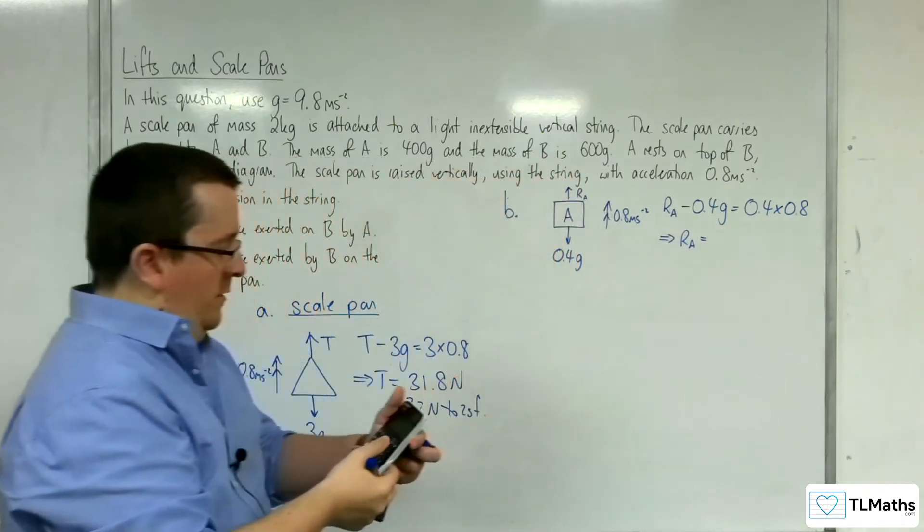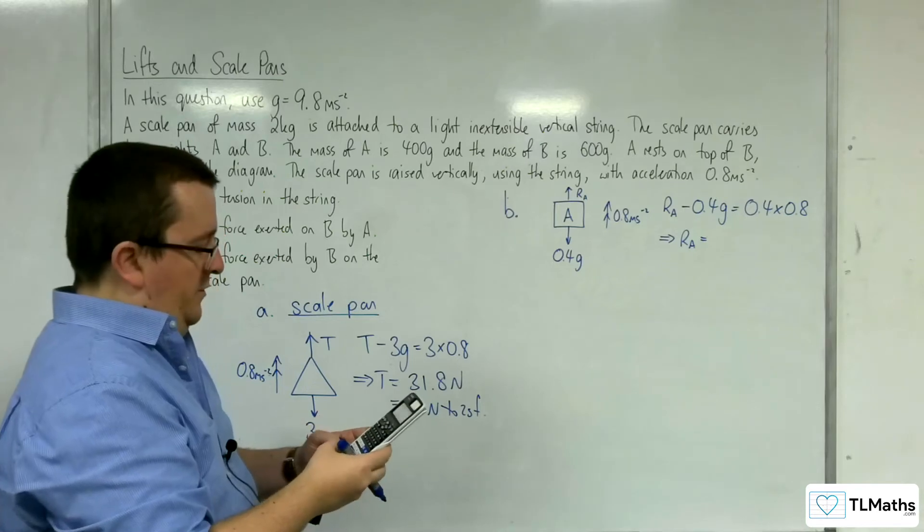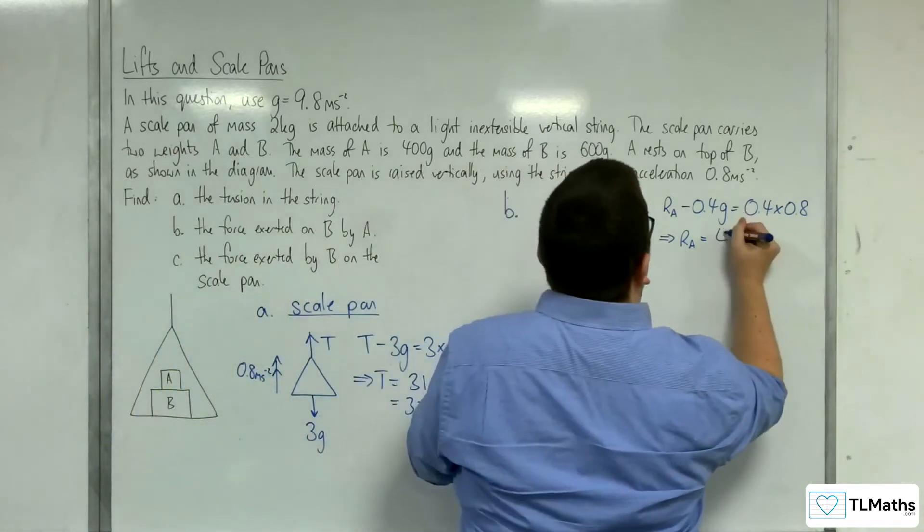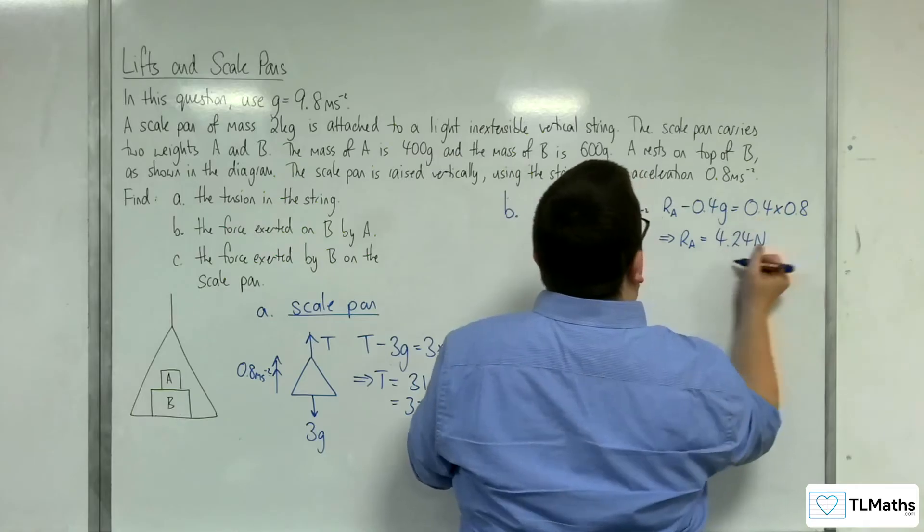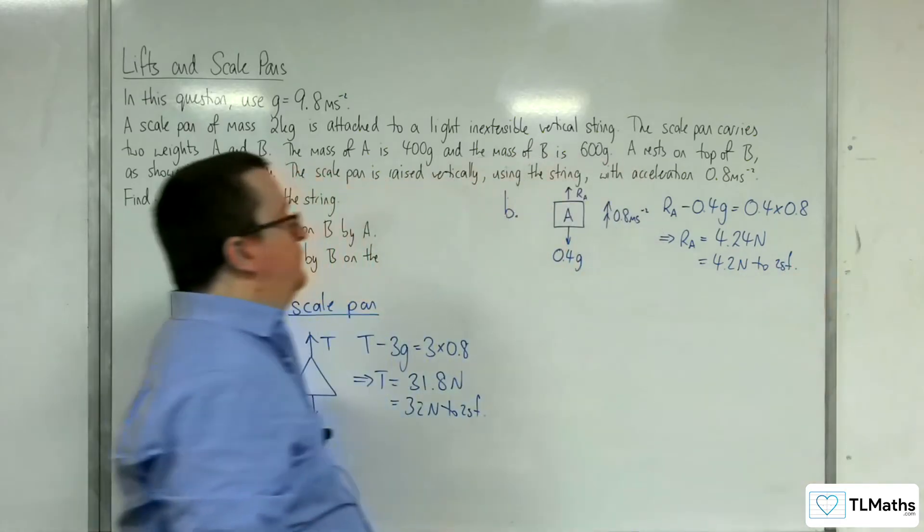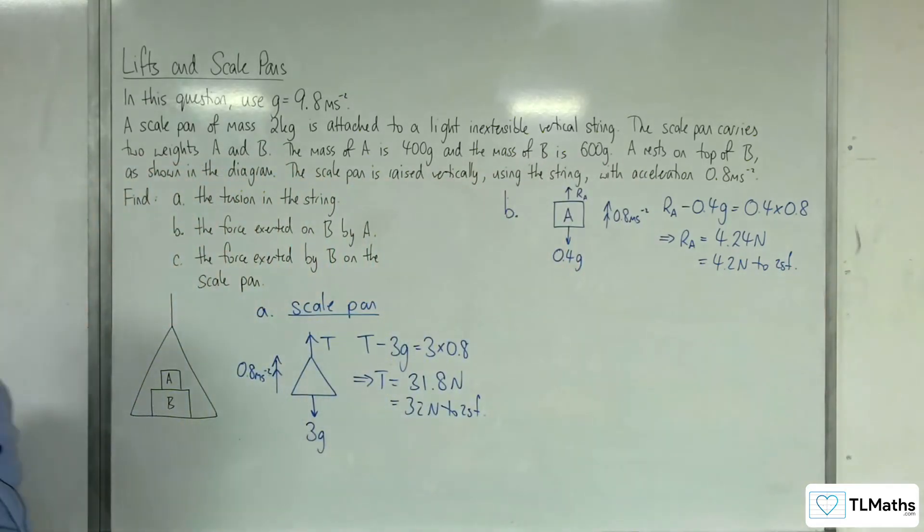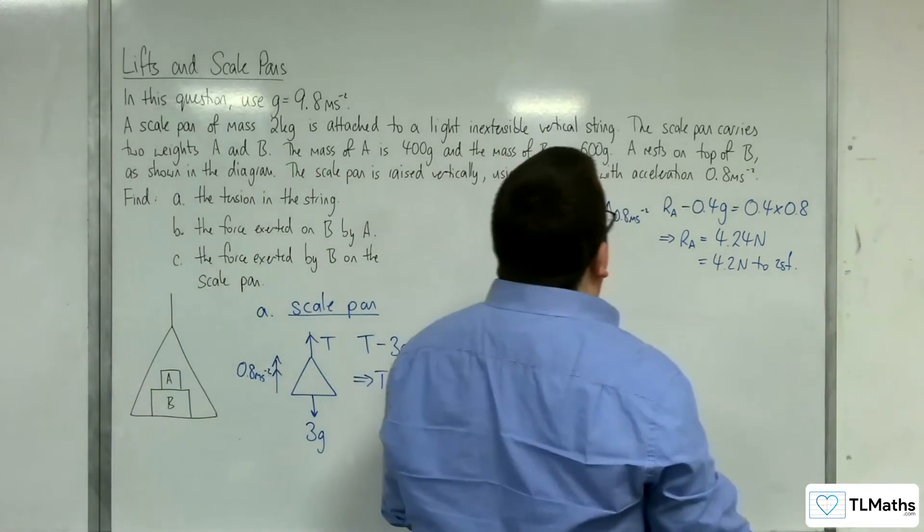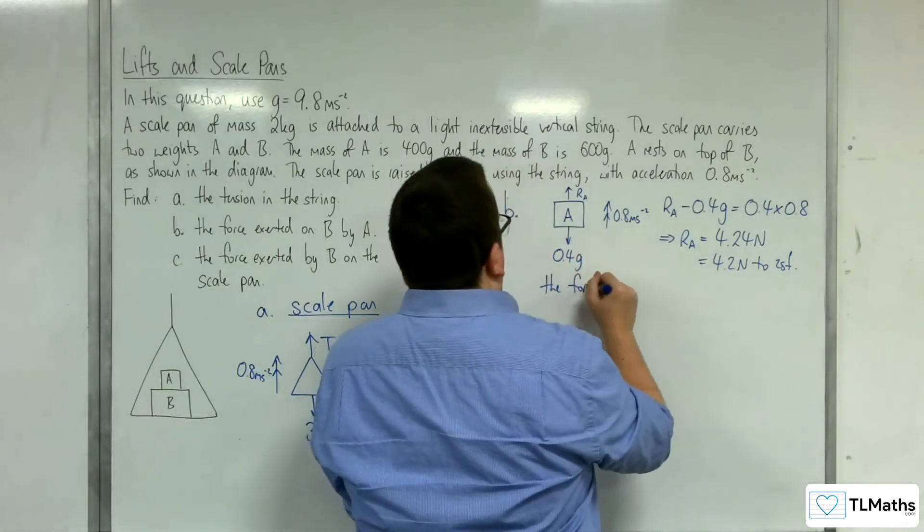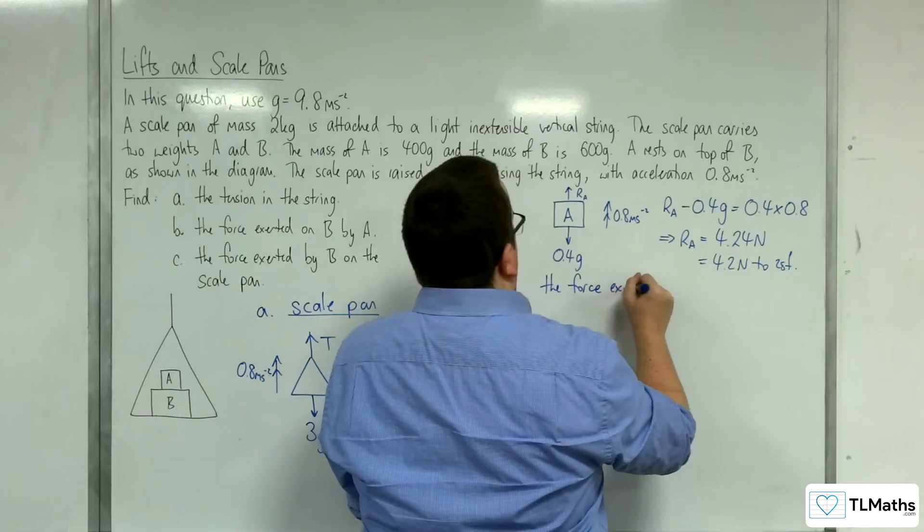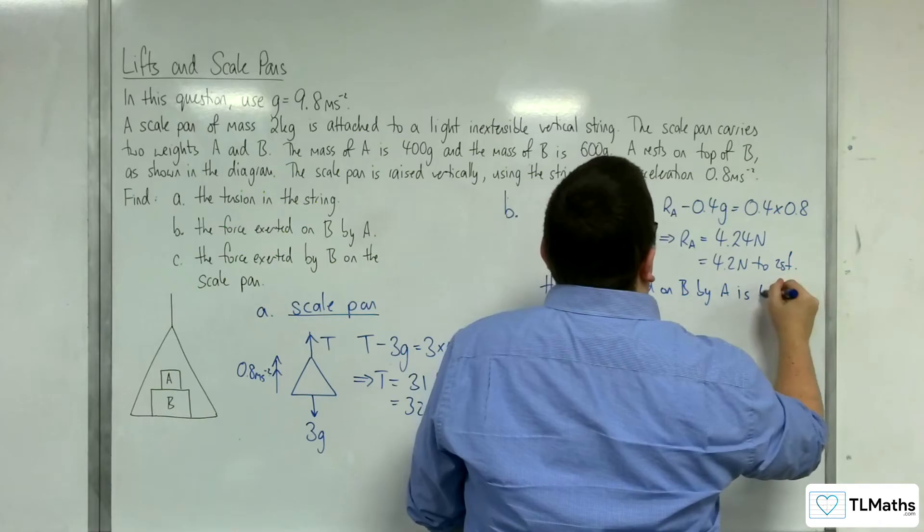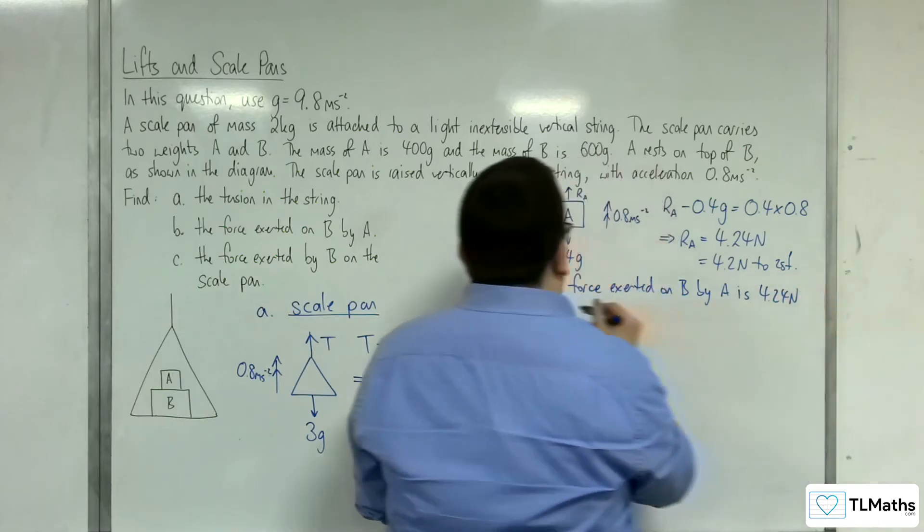So we've got 0.4 times 0.8 plus 0.4 times 9.8. And we get 4.24 newtons, which is 4.2 newtons to 2 significant figures. OK, so we can say the force exerted on B by A is 4.24 newtons downwards.